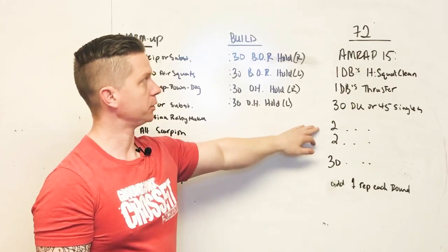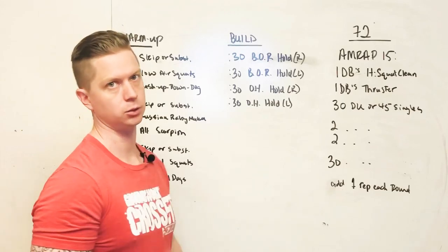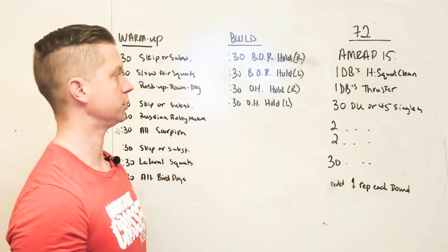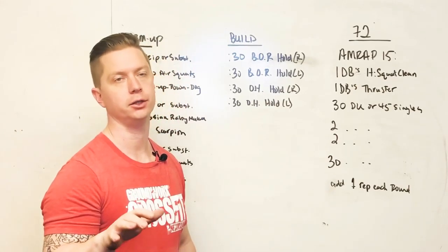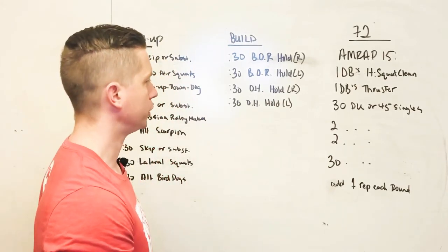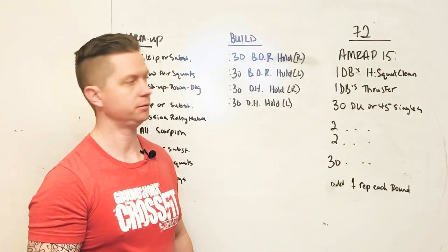Then we do two reps of dumbbell hang squat clean into two reps of thrusters, do our skipping section, and then we do three of each. You kind of got it—what we're doing here is we're adding one rep every single round until you run out of time at that 15 minutes.